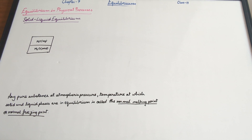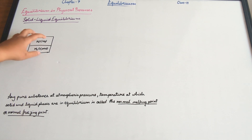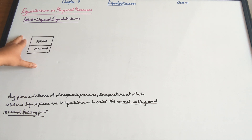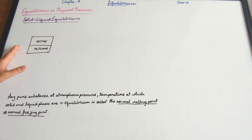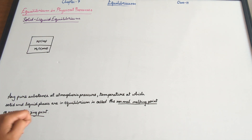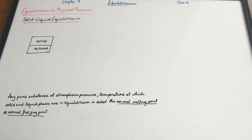We are discussing the solid-liquid equilibrium. Let's assume we have a system which is a closed system, meaning it's completely insulated and there is no exchange of heat between the system and the surroundings. The temperature is 273 Kelvin, which is 0 degrees Celsius, and the pressure is atmospheric pressure which remains constant.